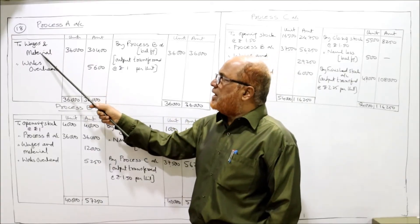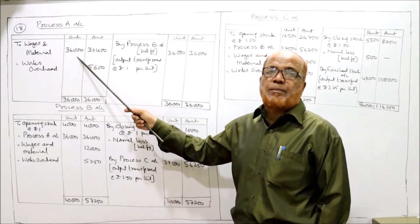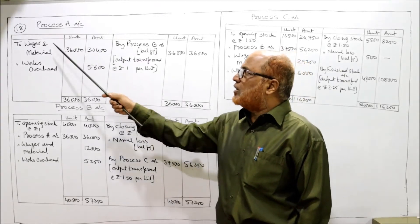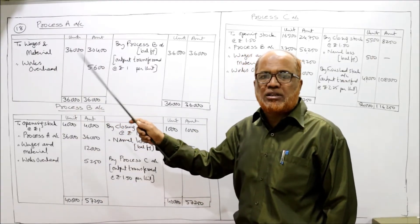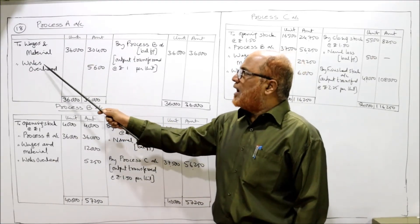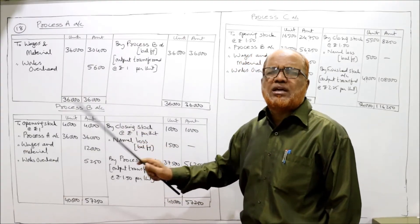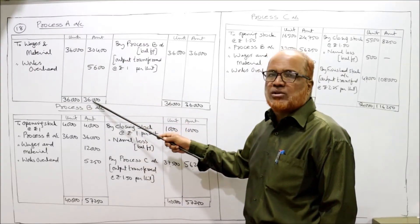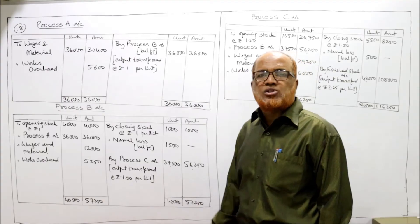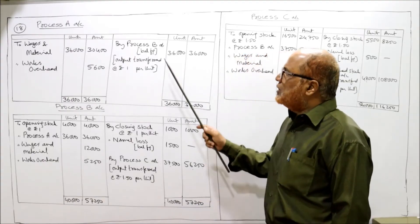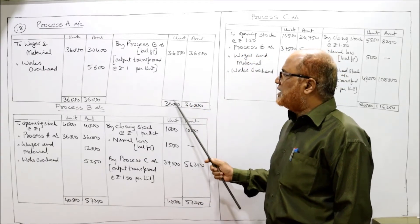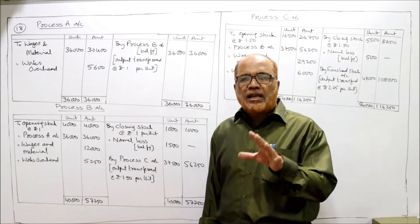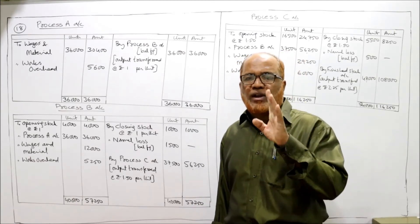In process A account, wages and material: production is 36,000 units, value is 30,400 rupees. Works overhead is given as 5,600. Total: units 36,000, amount 36,000 rupees. The whole output will go to the next process B. So output transferred to process B account: 36,000 units, 36,000 rupees — giving a cost of 1 rupee per unit in process A. This 1 rupee per unit will be used to calculate the opening stock and closing stock of process B.